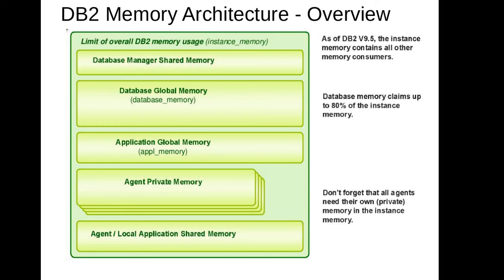At the top we have the instance memory, and that instance memory will be utilized by the databases inside that instance. For example, if you have eight databases inside the instance, all eight databases will share the overall limit of that instance memory. If you set instance memory to 10 GB and you have five databases, that 10 GB has to be shared between those five databases. Also importantly, if you set the instance memory to 100 GB, the instance has a tendency to give 80 to 90% of that memory to the database memory — so 80 GB goes to database memory and the remaining 20 GB is allocated to other memory segments.